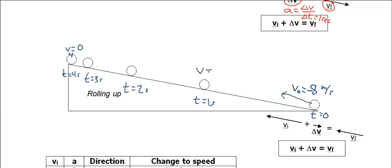One second later, it would be going at negative 6 meters per second — I can draw that with a slightly shorter vector. After another second, it's going 2 m/s slower: negative 4, drawn at about half the original length. Then a velocity of negative 2 meters per second with a very short vector. And finally, no velocity vector — it comes to rest. So throw it with a speed of negative 8, and by the time it reaches the top, it'll come to rest, just as it was released from rest going down.